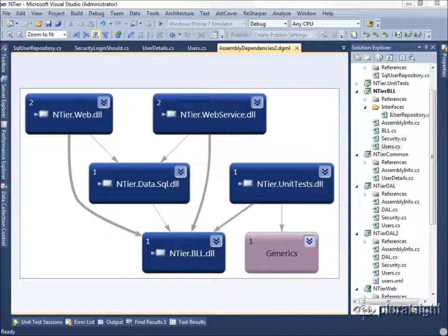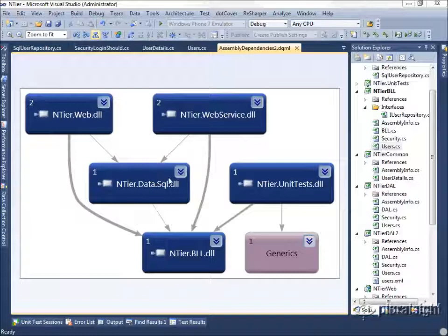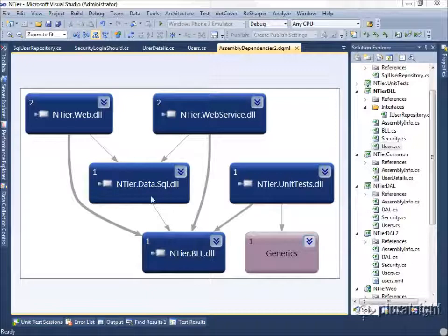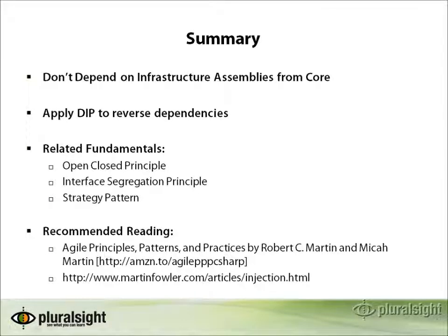After completing our refactoring of the N-tier business layer to use separate interfaces for its dependencies, you can see that the dependency graph now has the user interface web and web service layers depending on the infrastructure SQL layer directly and the business logic layer. But notice that the business logic layer no longer depends on its infrastructure. Unit tests are able to depend on it and test it in isolation. This dependency from the UI to the data layer could also easily be broken if we introduced another assembly specifically for dependency resolution — a common practice for IOC container work.